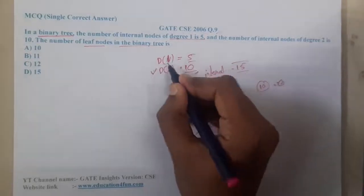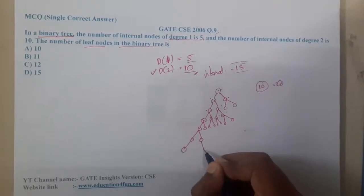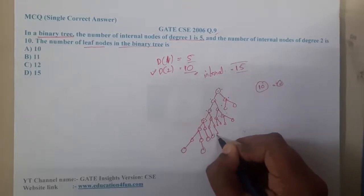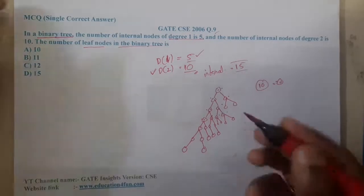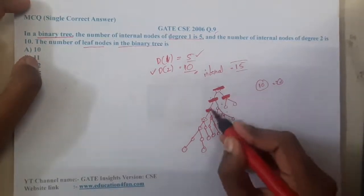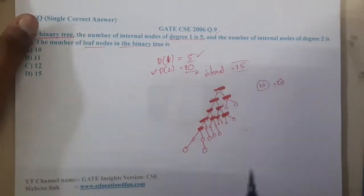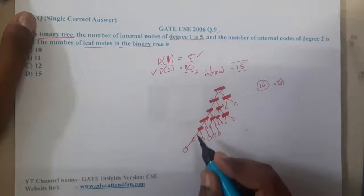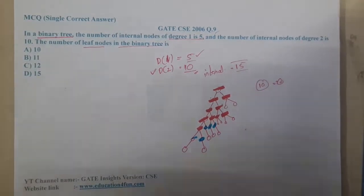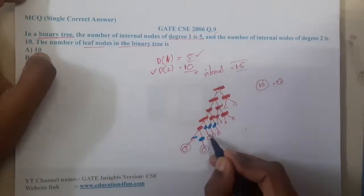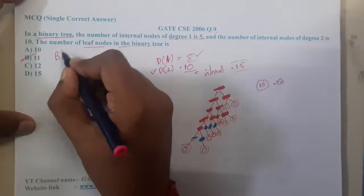Now I need five degree-one nodes — nodes with only one child. I'll add those: one, two, three, four, five. Now I'll mark the degree-two nodes in red — one through ten. And the degree-one nodes in blue — one through five. Counting the leaf nodes: one, two, three, four, five, six, seven, eight, nine, ten, eleven. So we get 11 leaf nodes.